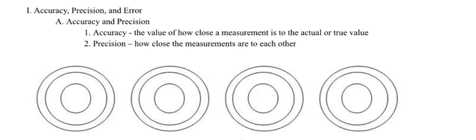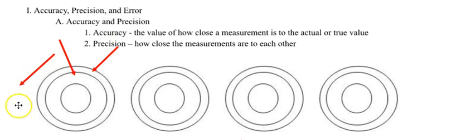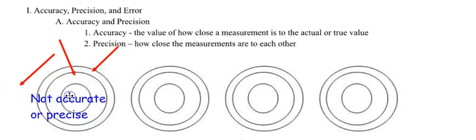Let's say I'm a beginner with my bow and arrow, and I shoot three arrows — one of them didn't even make it on the target. How would you describe my abilities? Am I accurate? Is the average in the middle of the bullseye? No. Are my three arrows close together? No. So I am neither accurate nor precise.